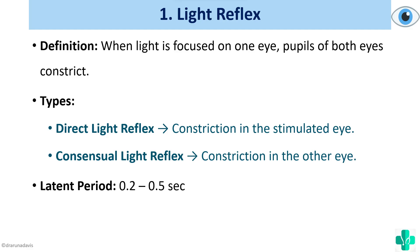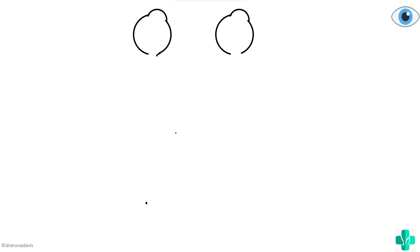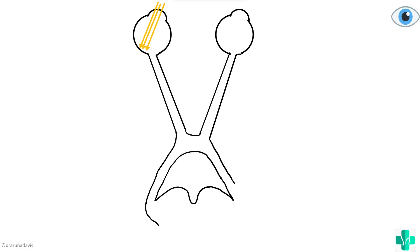The latent period of the light reflex is around 0.2 to 0.5 seconds. Now we are going to see the pathway by which this works — why the pupils constrict when light is shown on one eye, and why the pupil of the other eye also constricts. Suppose these are the outlines of the two eyes. We know the basic visual pathway in which fibers pass through the optic nerve, optic chiasm, and optic tract.